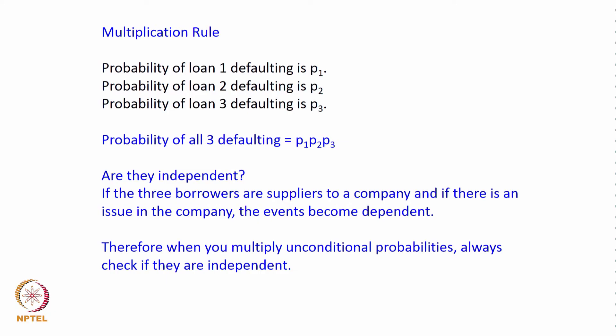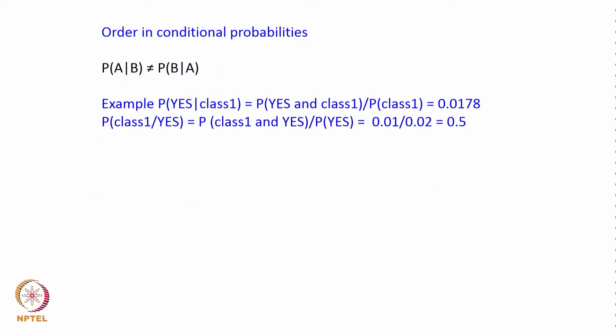It is very important to know that P(A|B) is not equal to P(B|A). For example, P(joining | class 1) = P(joining and class 1)/P(class 1) = 0.0178, whereas P(class 1 | joining) = P(class 1 and joining)/P(joining) = 0.5. So P(A|B) ≠ P(B|A).